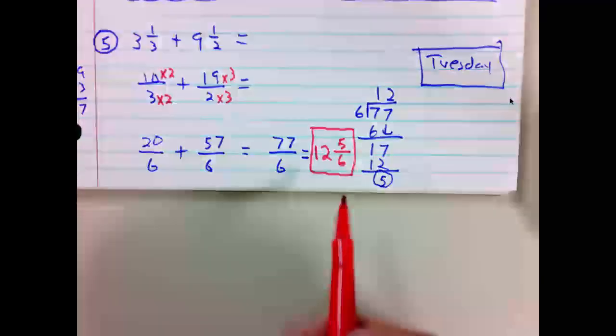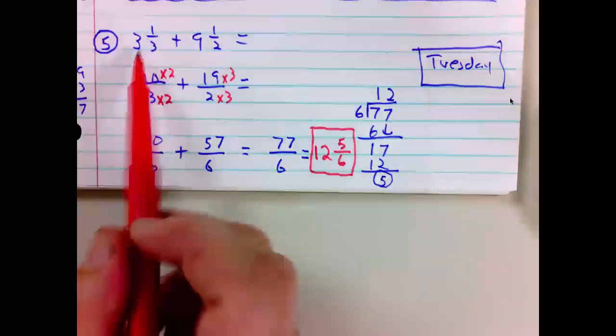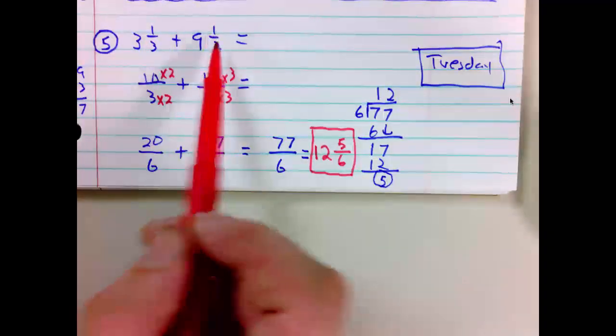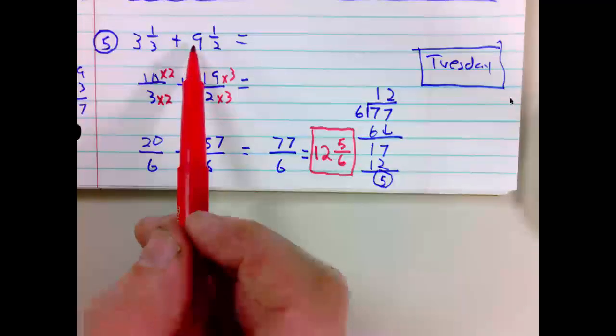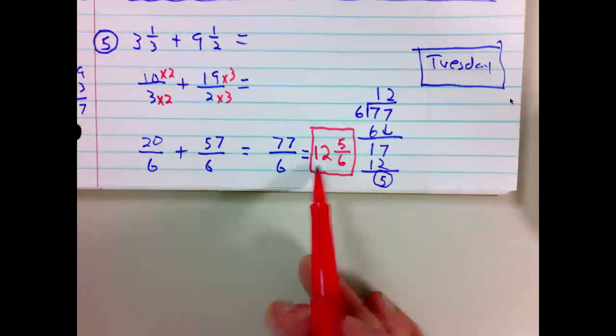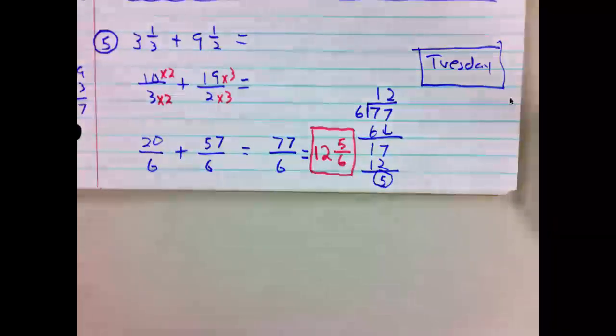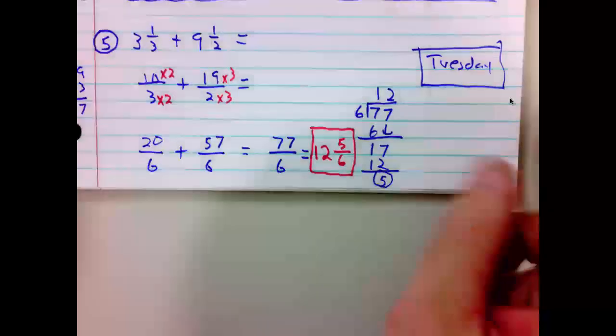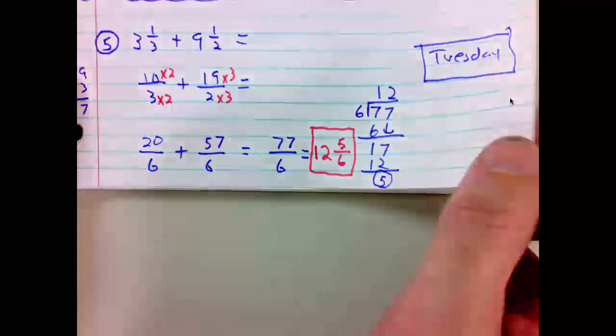Let us again consider reasonableness. The initial was 3 and 1 third, 3 and a little, plus 9 and a half. What's 3 plus 9? 12. So we see 12 and 5 sixths is indeed a reasonable answer. Last one we do here will be problem number 8.